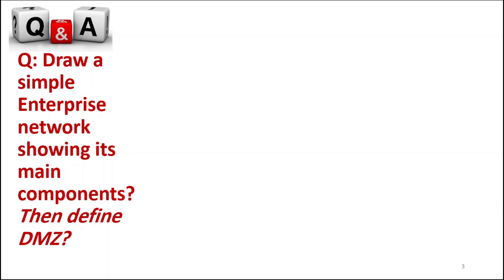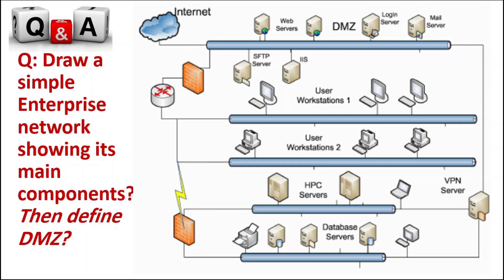Question two: draw a simple enterprise network showing its main components, then define DMZ. The enterprise network includes LAN, WAN, MAN, PAN, CAN, and other networks. The DMZ area contains shared servers such as web servers, login servers, and DNS servers. The DMZ is an open, shared area between the enterprise network and the internet — shared between the inner and the outer network.